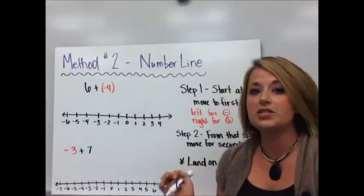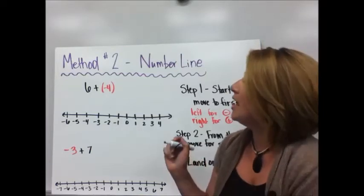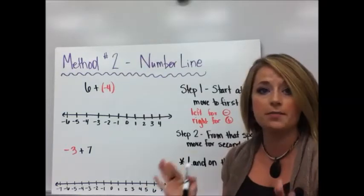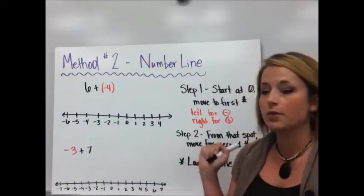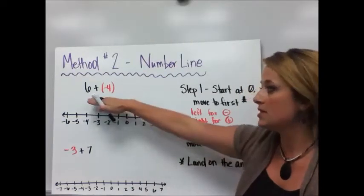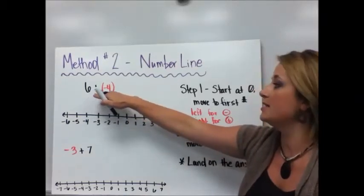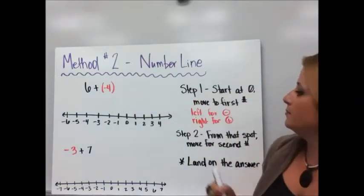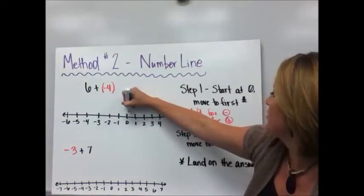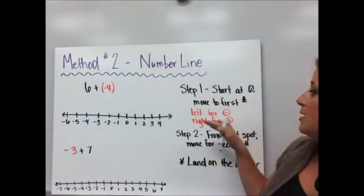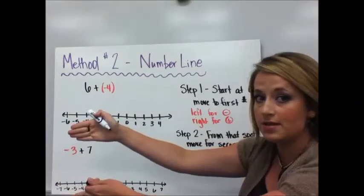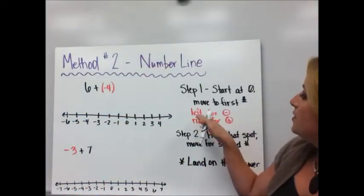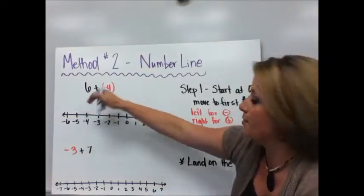The second method is using a number line. You may or may not always have a physical number line with you. I have some in the classroom that you're welcome to use at any time, but you can always sketch one out on your notebook paper. So let's take that same problem, six plus negative four. What you do is you start at zero. So here we are at zero. And you're going to move to the first number. Left, as you remember, goes to the negatives. Right goes for the positives.